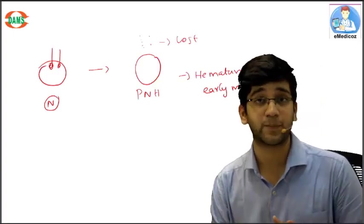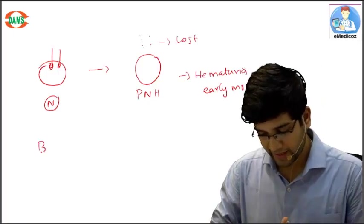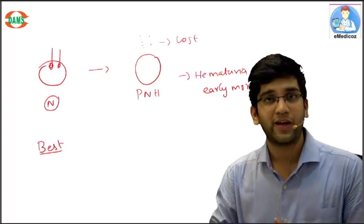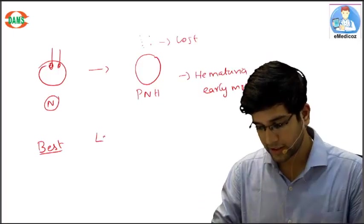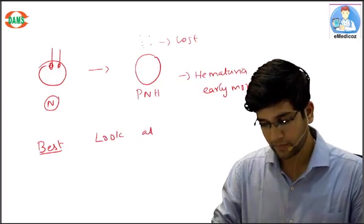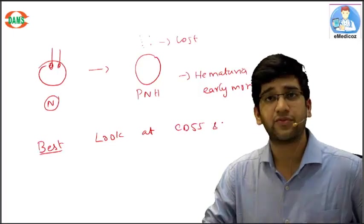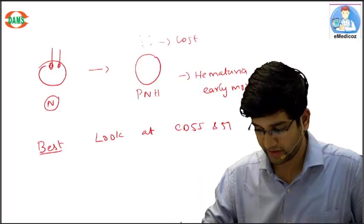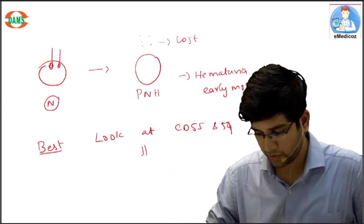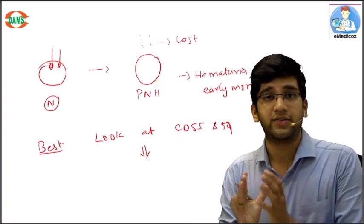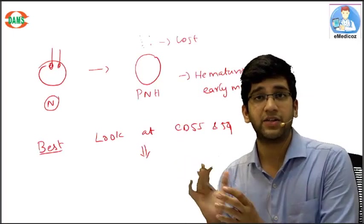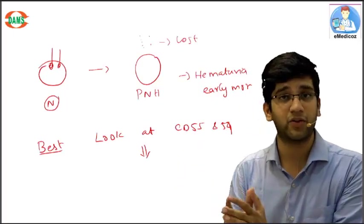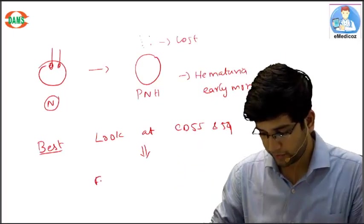Now how to diagnose it? The best way to diagnose PNH is if I can have a test where I can actually look at the CD55 and CD59 in the RBC. I'm going to look at a test which can help me establish CD markers. We already know the test - flow cytometry.